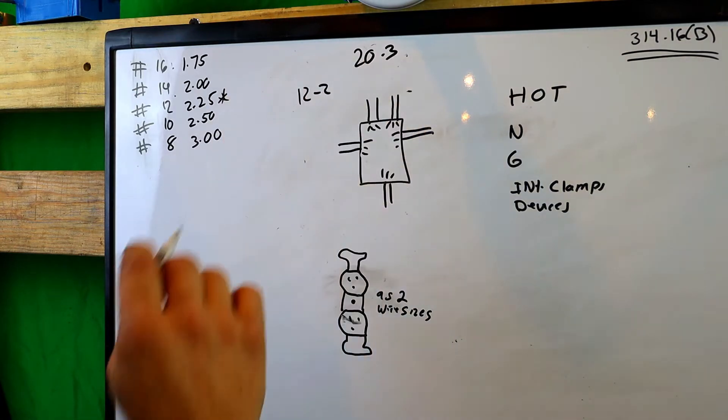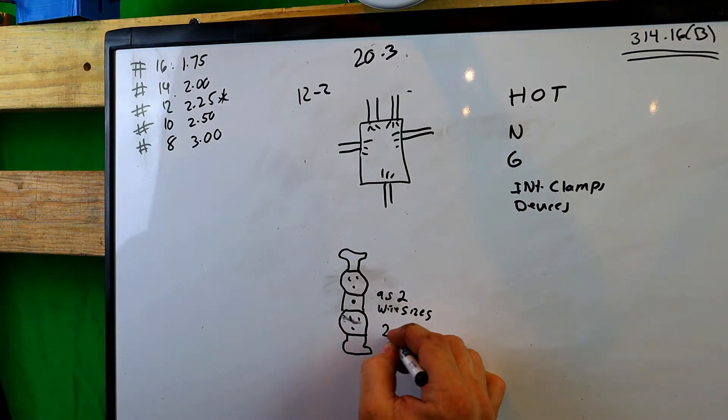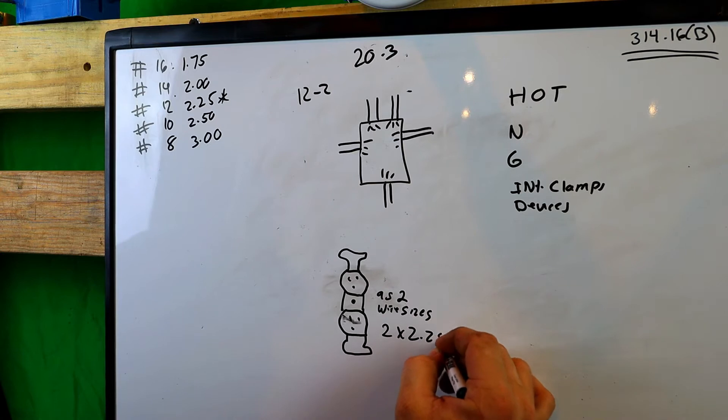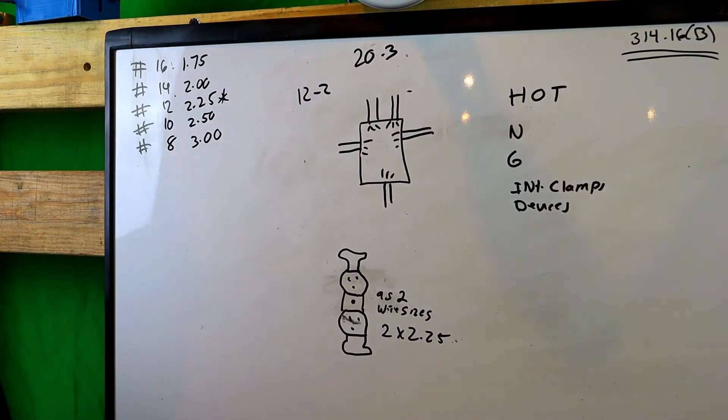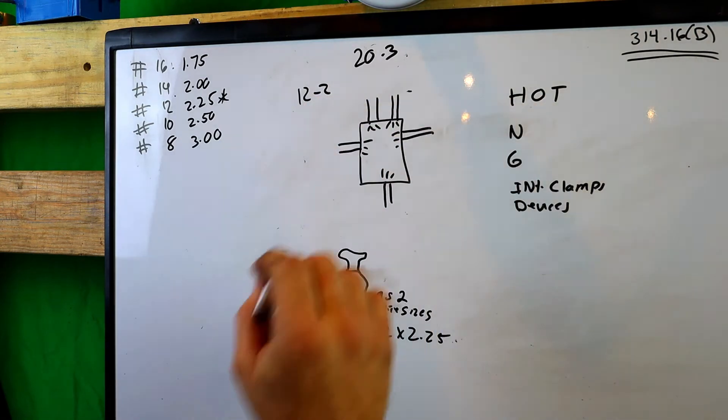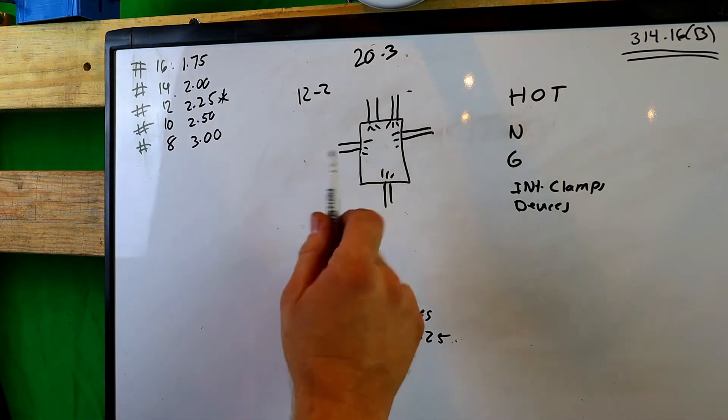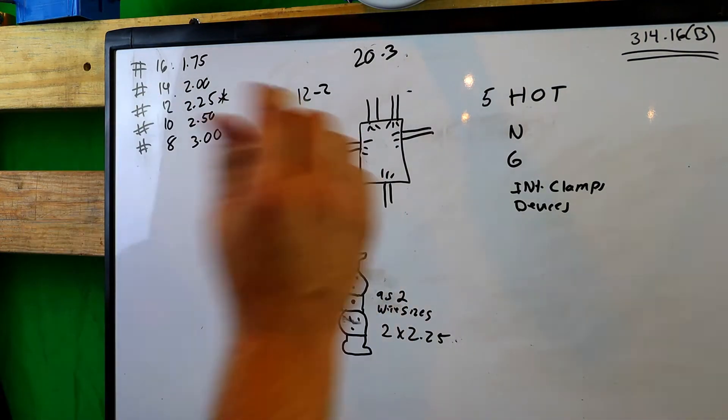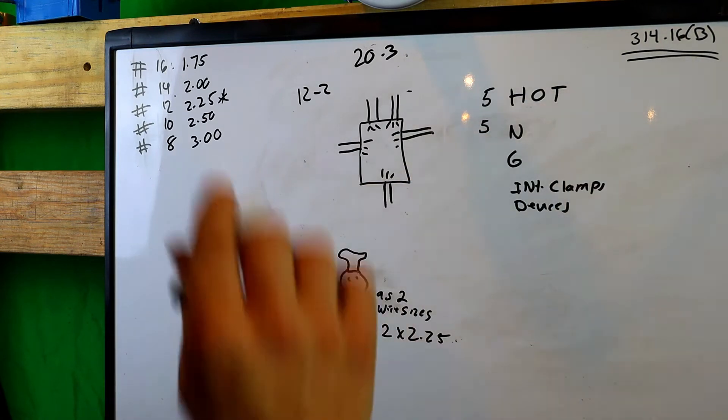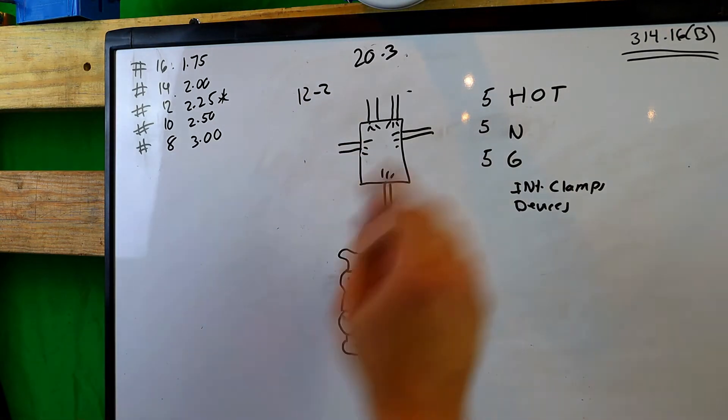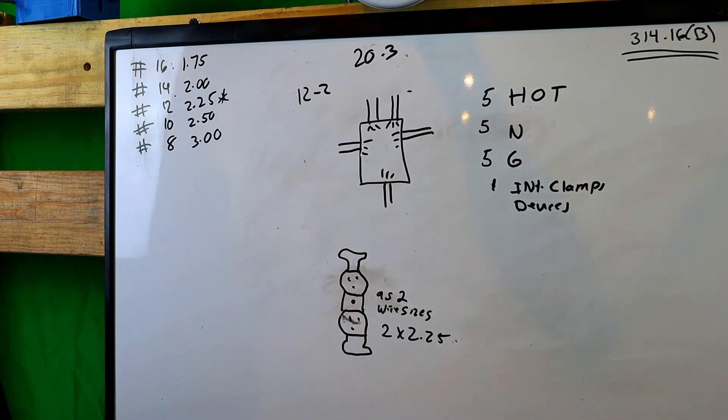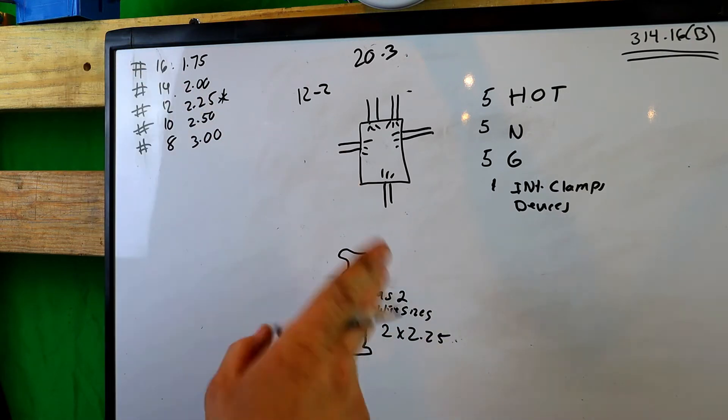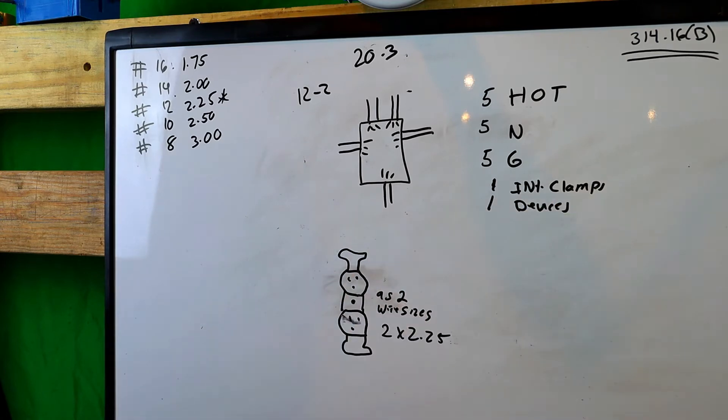Now we know we have one device. We have to count this device as two wire sizes. We know that everything here is going to be 12-2 romex, so everything in this box is 12-2. We know that our device is two times 2.25, and we can see that right here in the code book 314.16B. So we know that there's going to be 2.25 times two. We know that each romex has one hot - there's five romexes, so there's five hots. We also know that there's five neutrals in this romex, five grounds, one internal clamp because you only count the internal clamps as one, and one device. But we have to count each yoke strap as two wire sizes, so this will be 4.50 and we need to figure out the math.